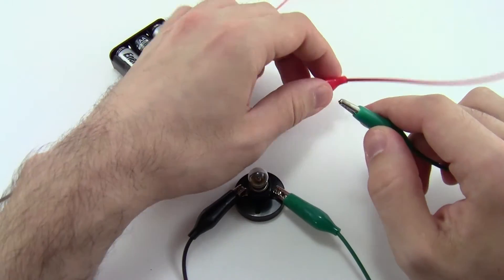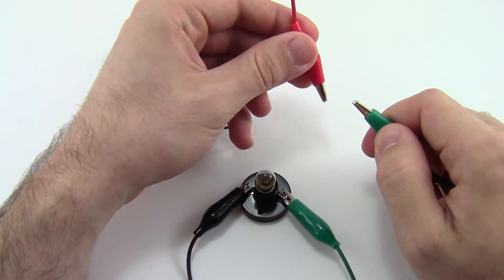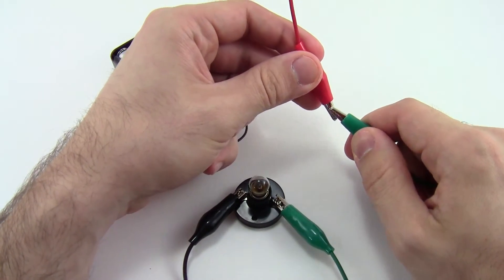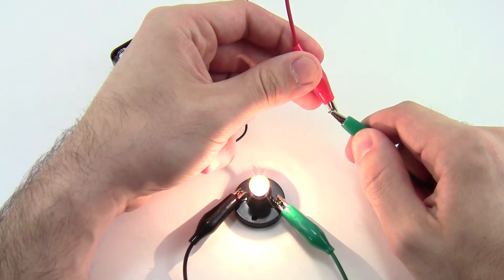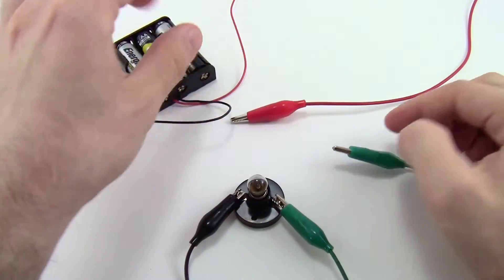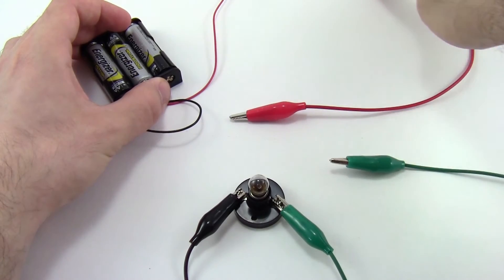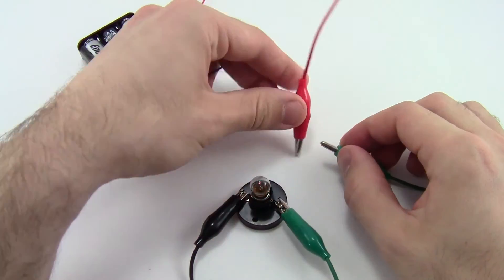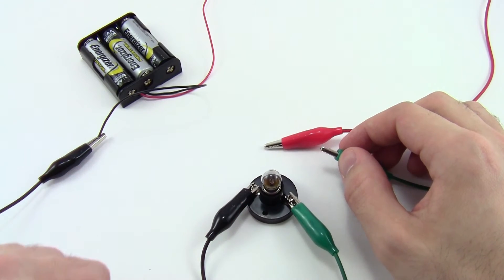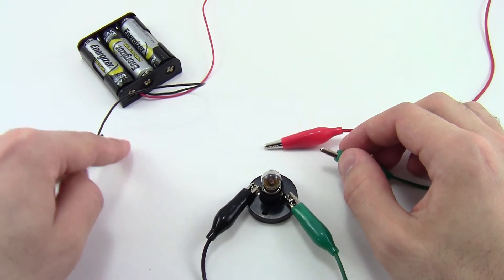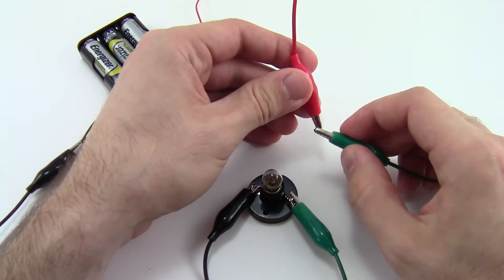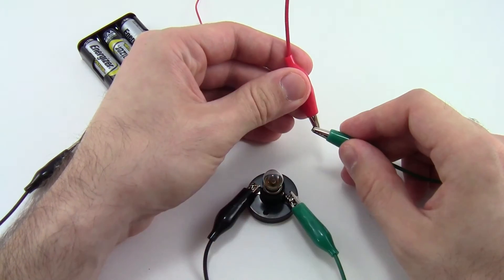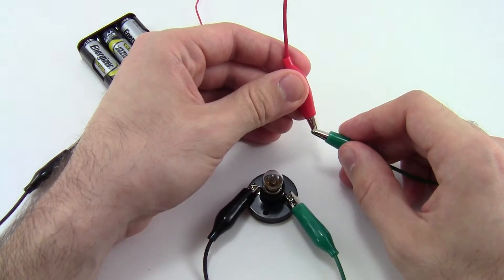However, if I take the free ends of the red and green alligator clips and touch them together, I have a closed circuit, so electricity can flow in a loop through this red wire, through the green alligator clip, through the light bulb, and then back through the black alligator clip and wire to the battery pack. So, check that your light bulb lights up when you touch these two alligator clips together.